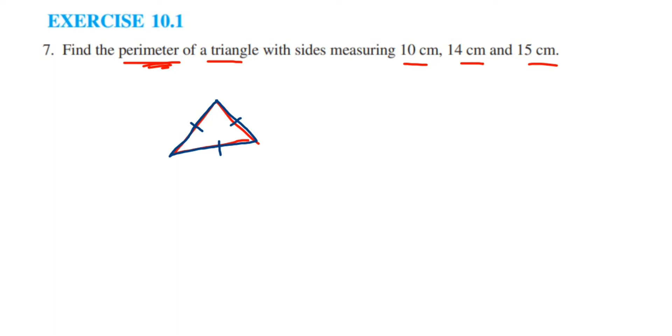Perimeter is the boundary of any given shape, so we're going to find out the perimeter by adding all the three sides. Here is the solution: perimeter of triangle equals - we have to just add all the three sides.